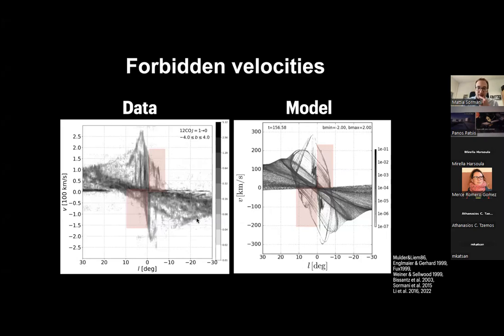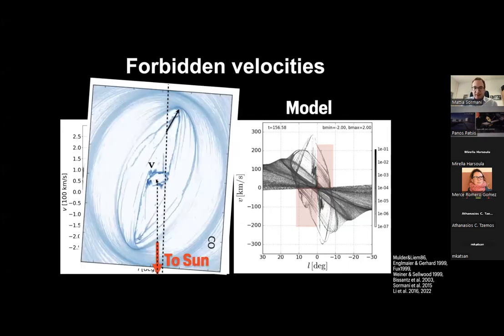Forbidden velocities: looking at the model you see the same features, and they arise because with non-circular motions you can have material on the right side of the galactic center moving away from you — impossible with circular motion, where everything on the right side moves towards you. So forbidden velocities are material on elongated orbits moving away from you.